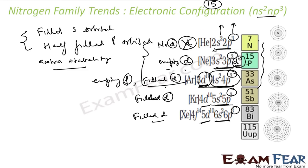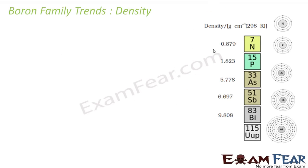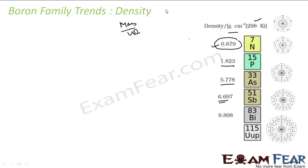Nitrogen has no d orbital because it belongs to the second period where no d orbitals exist. Now, the trend in density: density increases as we go down the group. Nitrogen has a density of 0.879 g/cm³ at 298 K; phosphorus 1.8; arsenic 5.7 g/cm³; and density continues to increase down the group. Mass increases more than volume as we go down, so the overall density increases.